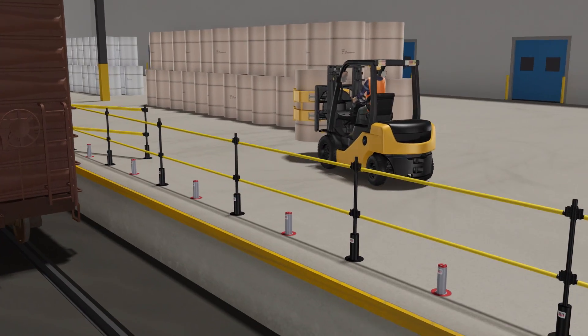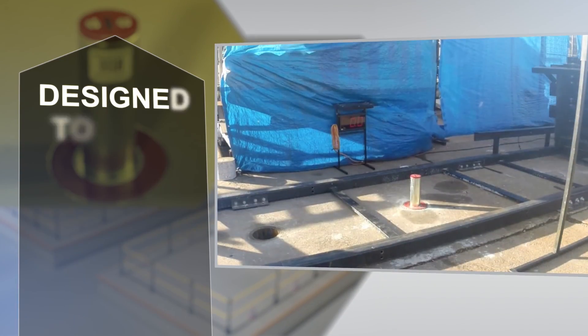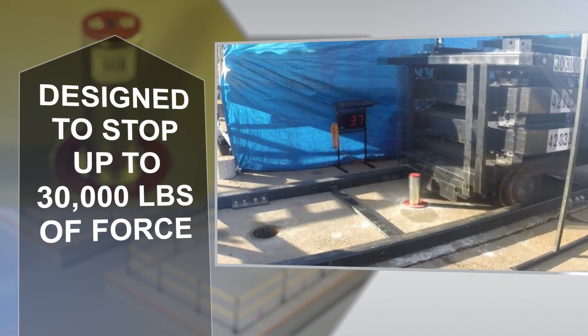The 10-inch tall GuardRite retractable barriers are built tough, designed to stop up to 30,000 pounds of force.